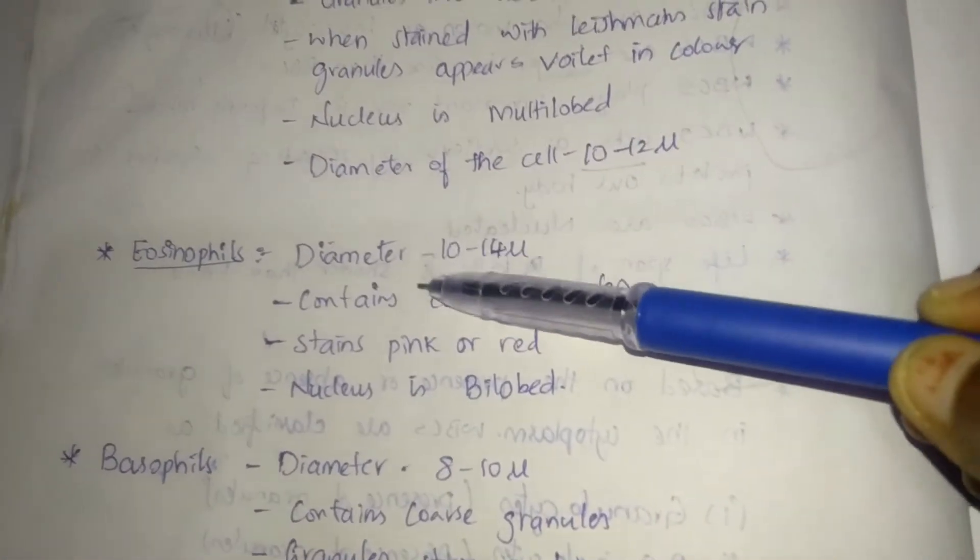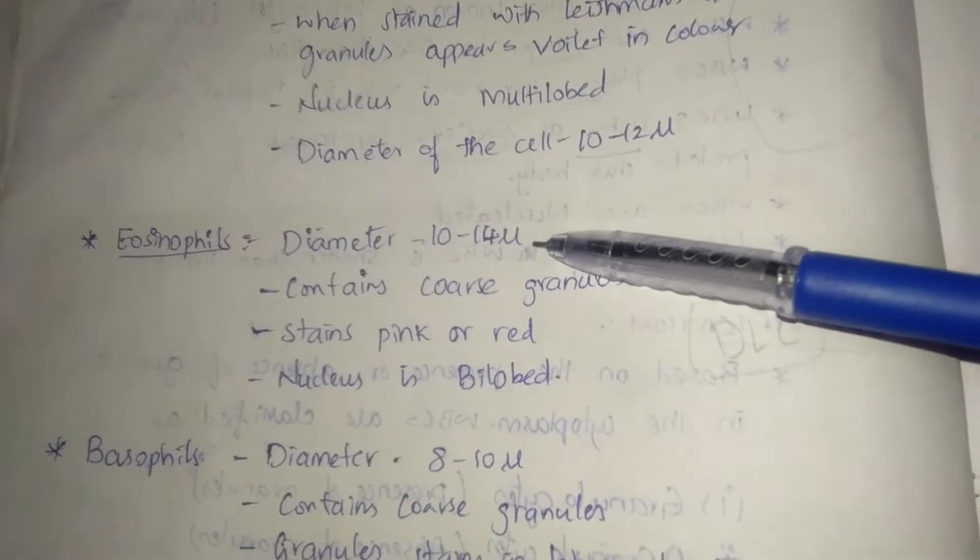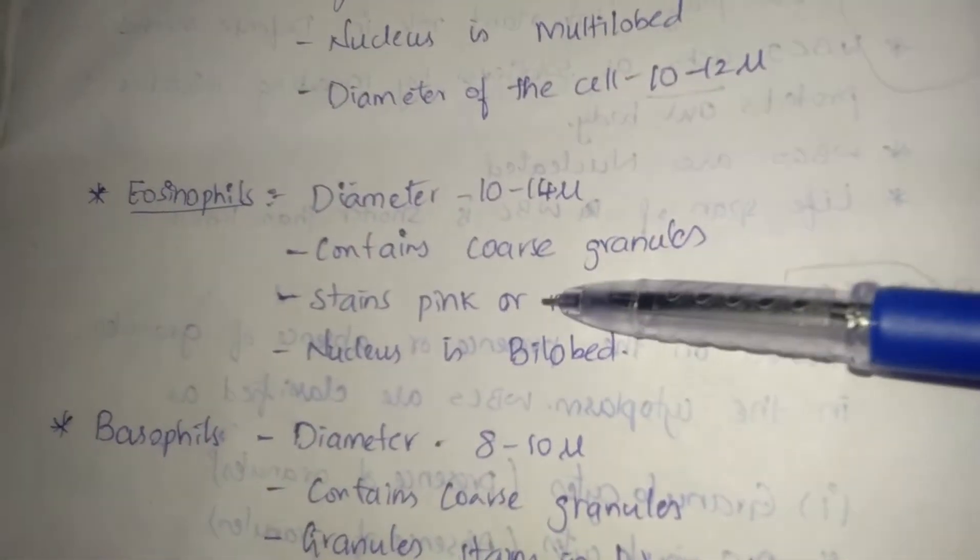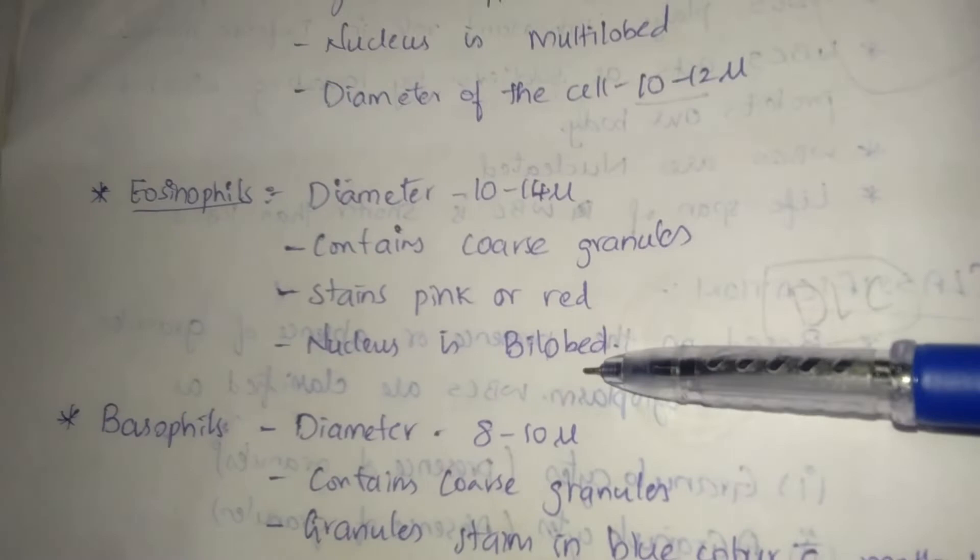Eosinophils: Diameter 10 to 14 microns, contains coarse granules, stains pink or red, nucleus is bi-lobed.